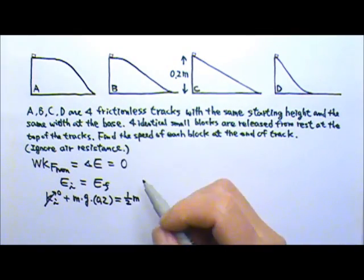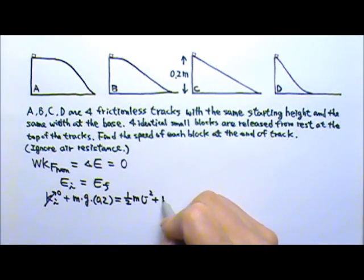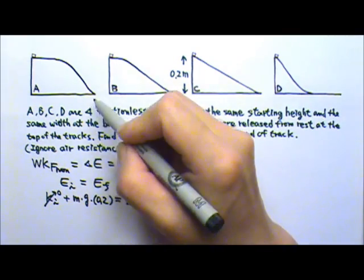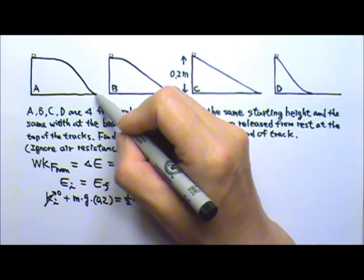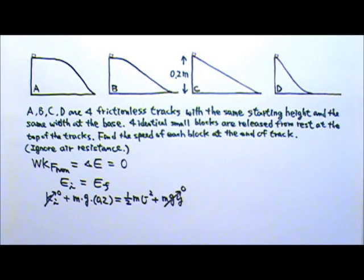At the end, at the bottom, the block is moving with a speed V. We do not know, we're looking for this speed. Is there Mgy? Down here, the small block will be on the ground, so Y is 0, which means we have Mg times 0.2 equals 0.5 Mv squared.